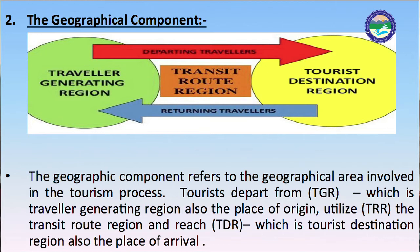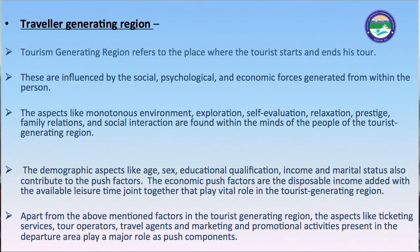Here we are looking at the diagram which completely describes the Leiper model. We have three regions: Traveler Generating Region, Transit Route Region, and Tourist Destination Region. The geographical component refers to the geographical area involved in the tourism process. The tourist departs from the TGR (Traveler Generating Region), utilizes the TRR (Transit Route Region), and reaches the TDR (Tourist Destination Region), also known as the place of arrival.